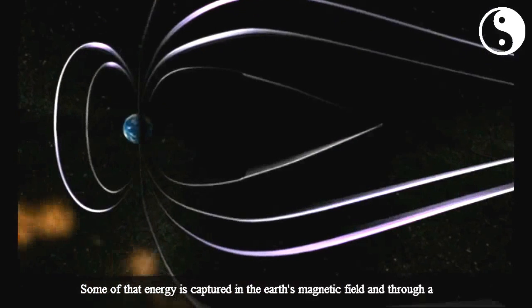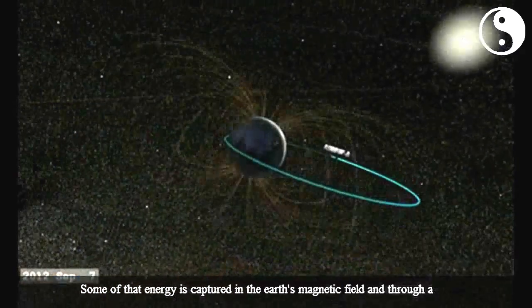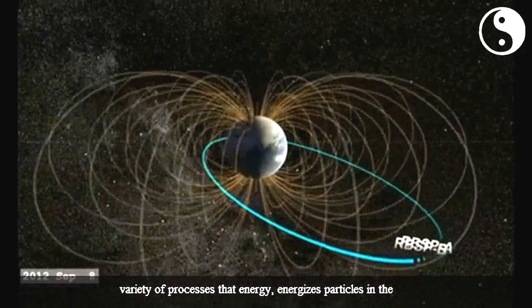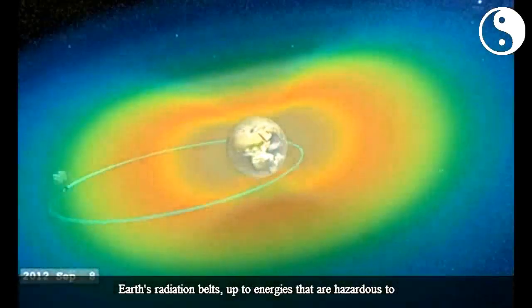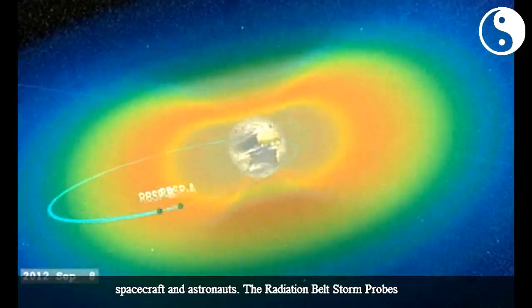Some of that energy is captured in the Earth's magnetic field, and through a variety of processes, that energy energizes particles in the Earth's radiation belts up to energies that are hazardous to spacecraft and astronauts.